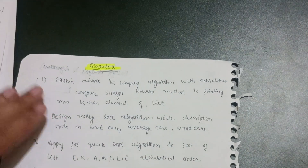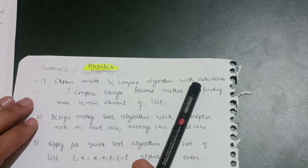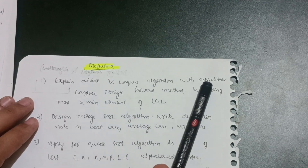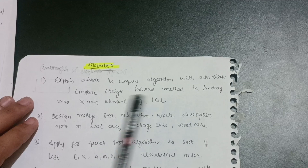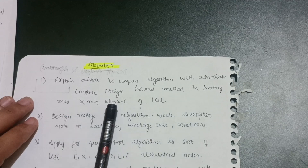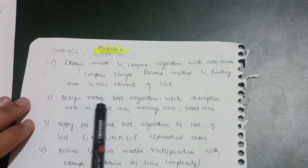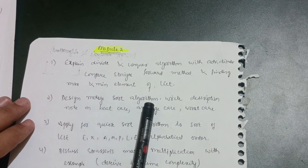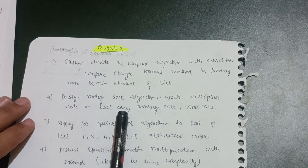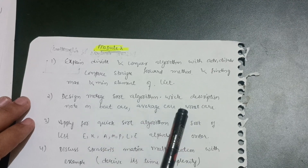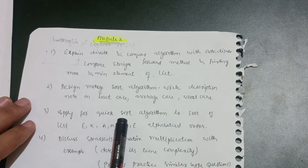Module 2: explain divide and conquer algorithm with its advantages and disadvantages, and compare the straightforward method for finding maximum and minimum elements. Next, design the merge sort algorithm and write a description note on best case, average case, and worst case.